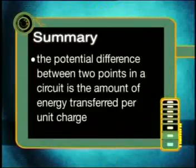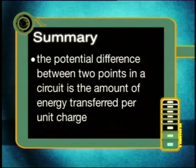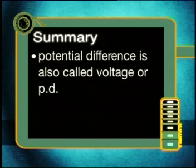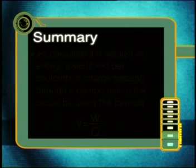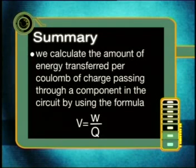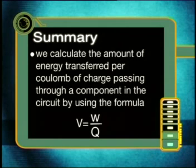Before we wrap up, let's summarize everything we have learned. The potential difference between two points in a circuit is the amount of energy transferred per unit charge. Potential difference is also called voltage or PD. We calculate the amount of energy transferred per coulomb of charge passing through a component in the circuit by using the formula V equals W over Q.